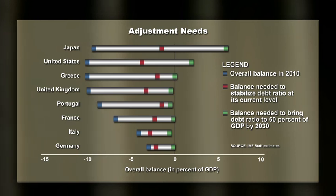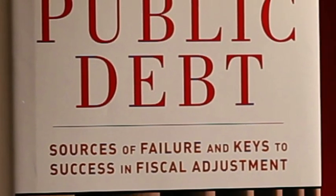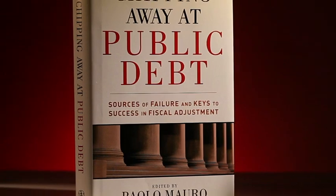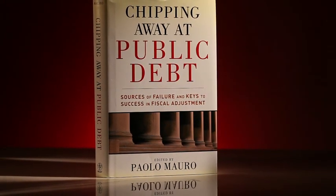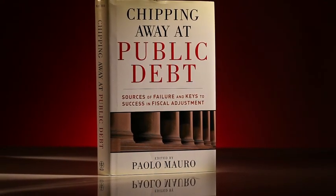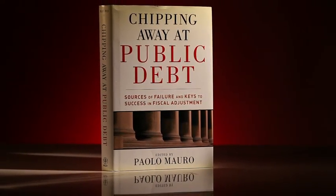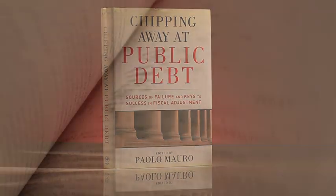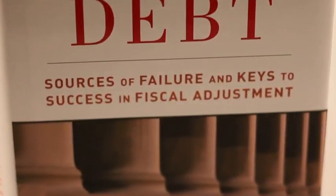Fiscal consolidation will be one of the defining economic challenges facing advanced economies over the next decade. A recent IMF book entitled Chipping Away at Public Debt examines past attempts to re-establish sustainable public finances. Using a case history approach, the book seeks to explain what worked, what did not, and why.